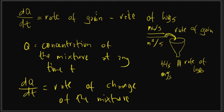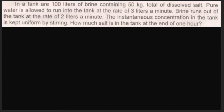Now for our example: in a tank are 100 liters of brine containing 50 kilograms of dissolved salt. Pure water is allowed to run into the tank at the rate of 3 liters per minute, and brine runs out of the tank at a rate of 2 liters per minute. The instantaneous concentration of the tank is kept uniform by stirring. How much salt is in the tank at the end of 1 hour?